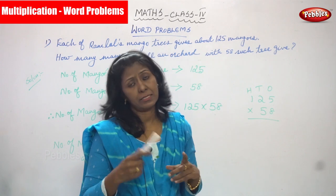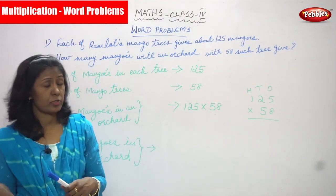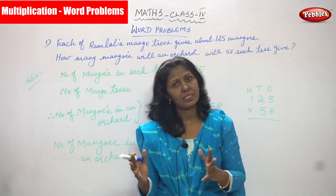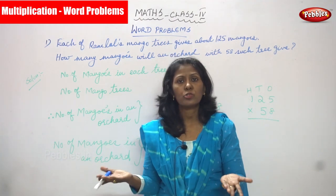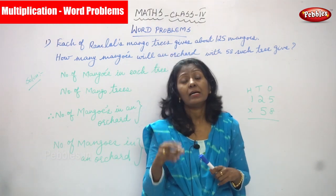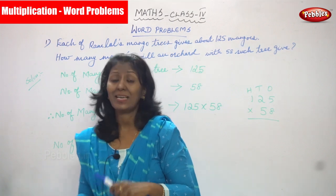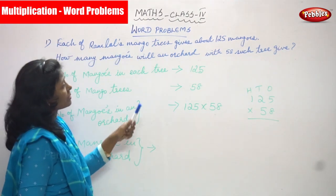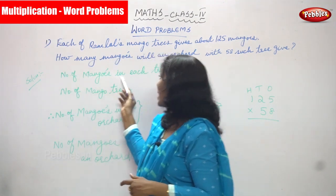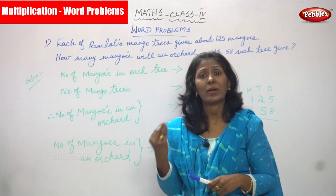The orchard owner is Ramlal. He has a lot of mango trees — 58 mango trees — in his orchard. Each mango tree gives 125 mangoes. So number of mango trees in the orchard is 58, and each mango tree gives 125 mangoes.